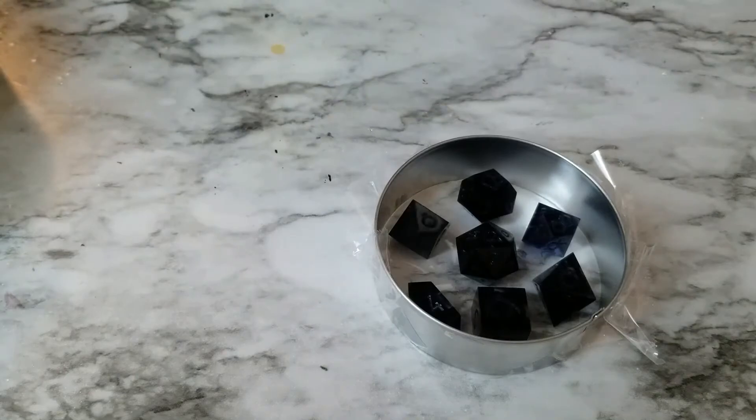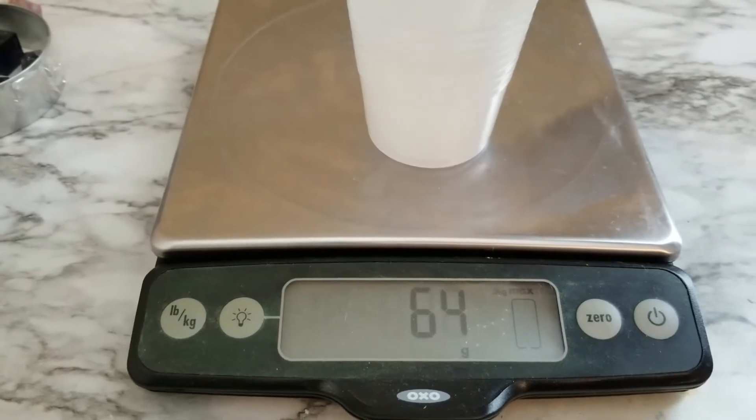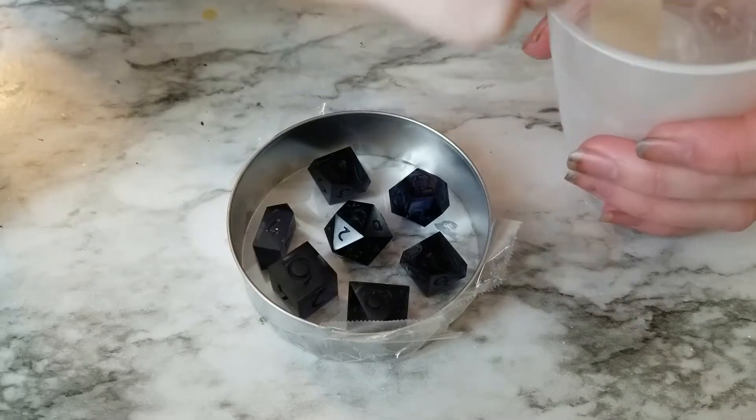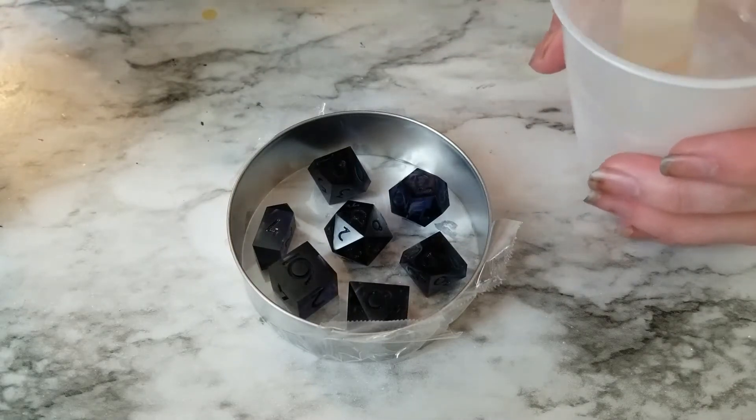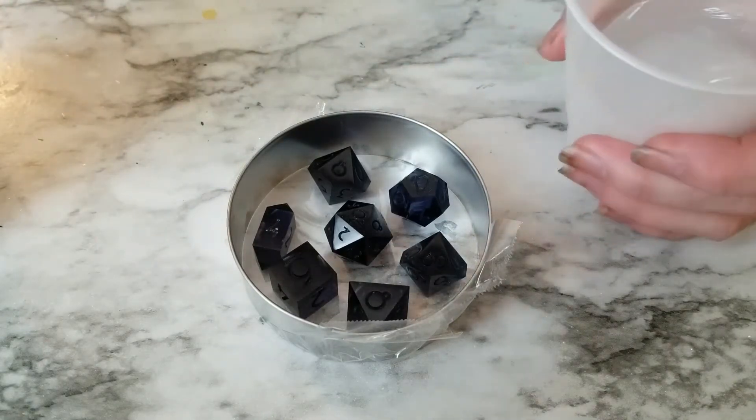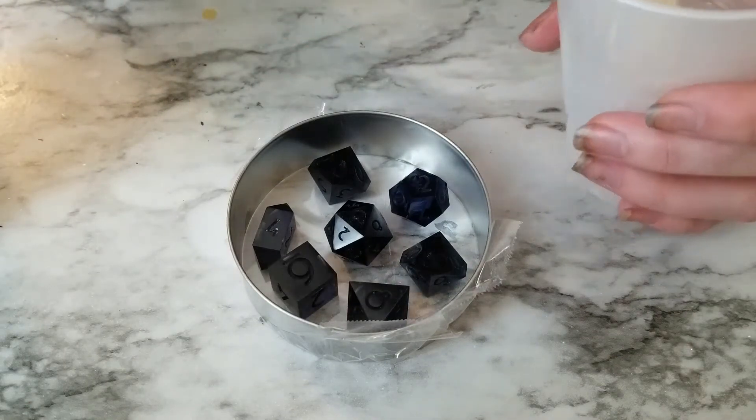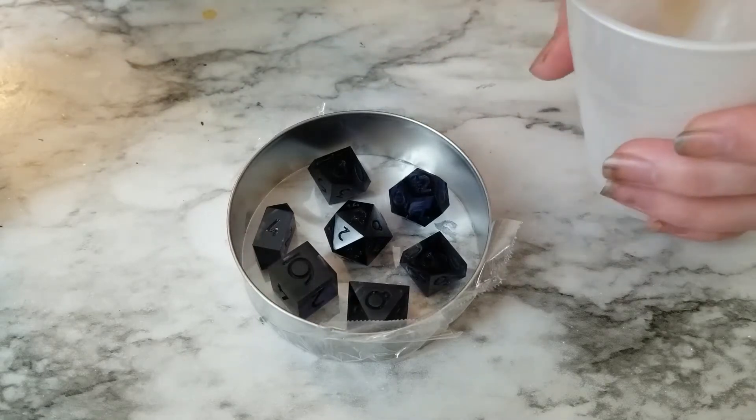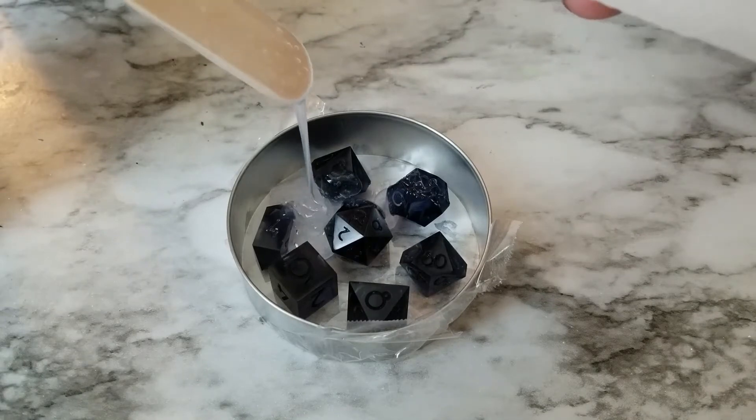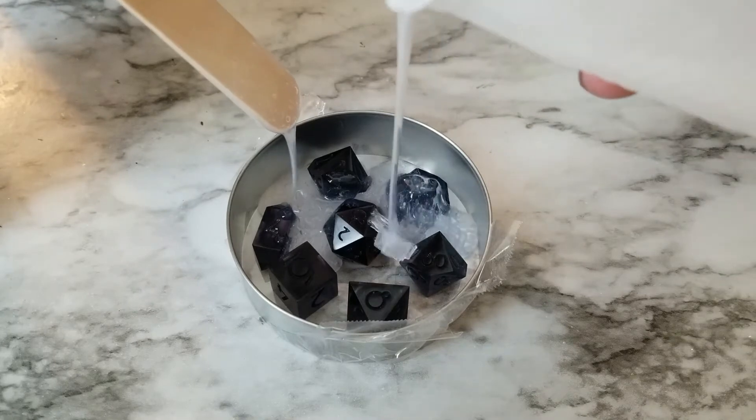After you have all your dice stuck down, you're going to mix up your silicone. I usually mix up 60 grams of each part for this part of the mold. I mixed up a little too much this time but that's fine, it ended up working out. I'm using Dragon Skin 10 Fast, so it has an 8-minute pot life and it cures in 75 minutes. When you're mixing this, make sure to mix it really well. Both parts are the same color so it's kind of hard to tell when you have it mixed completely. Just really mix until your arms are tired, but keep in mind that this silicone only has an 8-minute pot life.